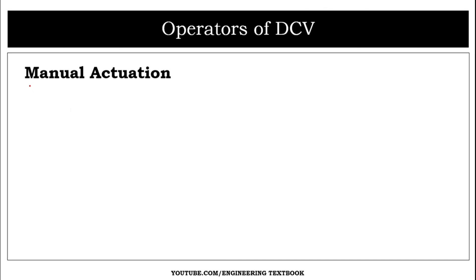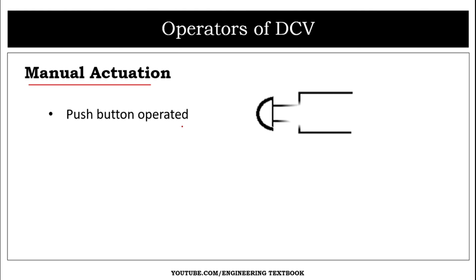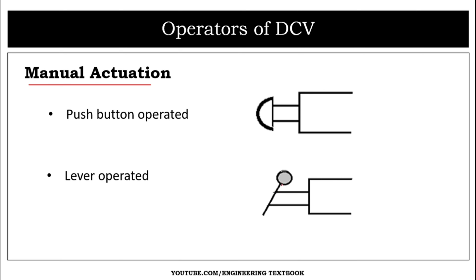The first method is manual actuation, which is of two types: push button operated, as seen in our previous videos, and lever operated. Both are manual activation methods.